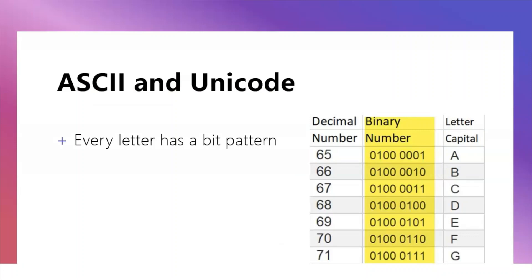You need to understand ASCII and Unicode — these are bit pattern representations of keyboard characters. Capital letter A has decimal value 65, binary 01000001. Lowercase a has its own different number. ASCII represents 128 characters including the null character; extended ASCII represents 256. Unicode can represent even more — including Chinese, Arabic, and Japanese characters — which is a limitation of ASCII, since it cannot represent those alphabets.